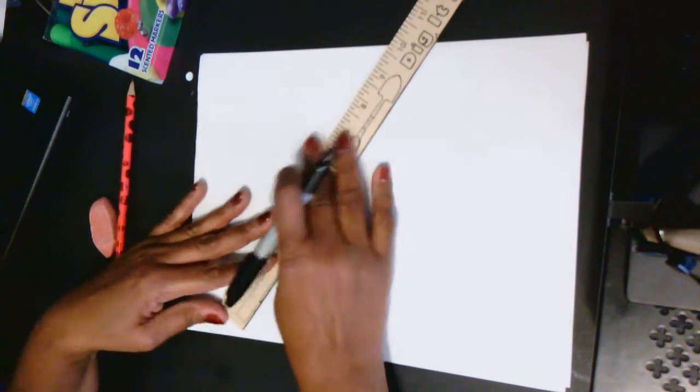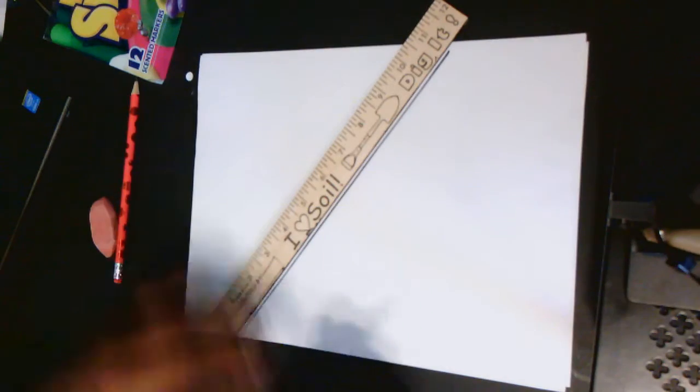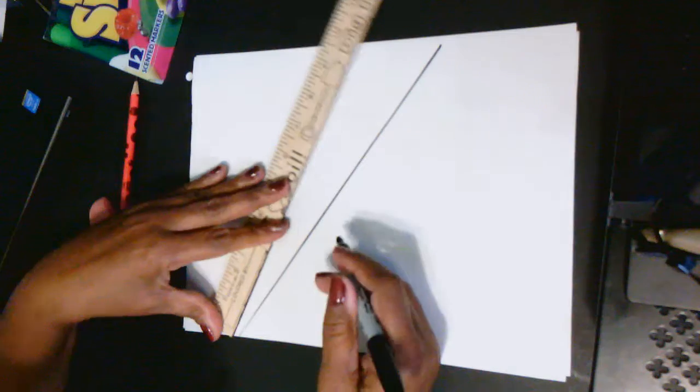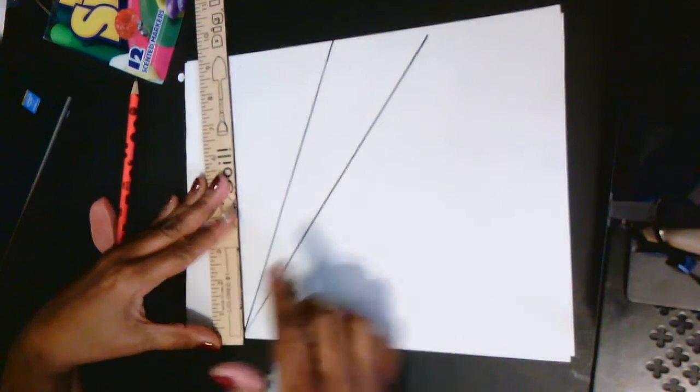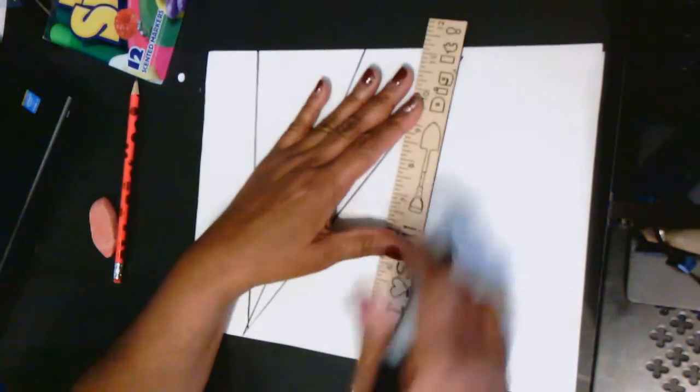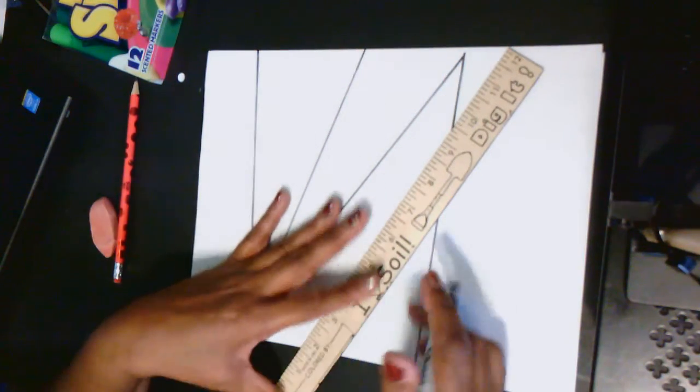I am just going to start with a few straight lines in different directions, just using the edge of my ruler so I know that they are straight. I don't have the best sharpie in the world. It's starting to dry out, but that's okay.